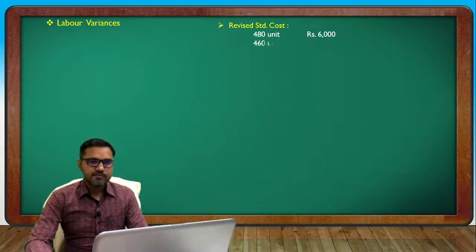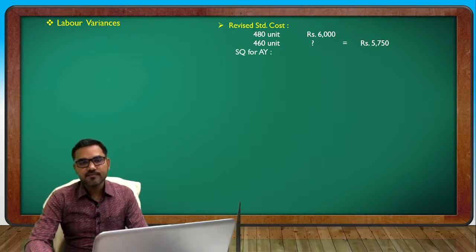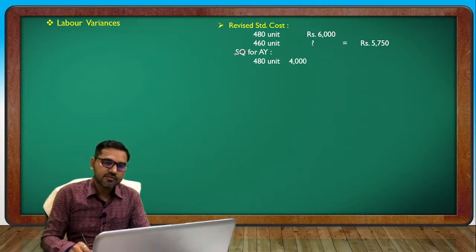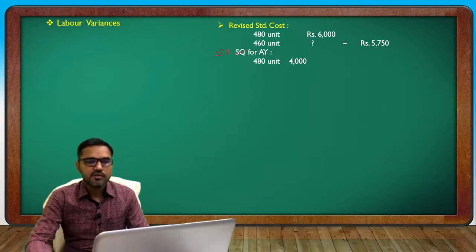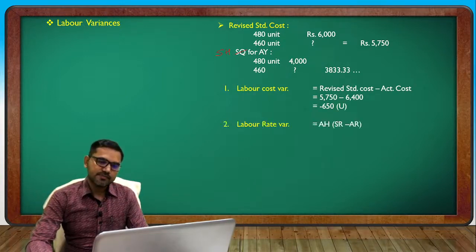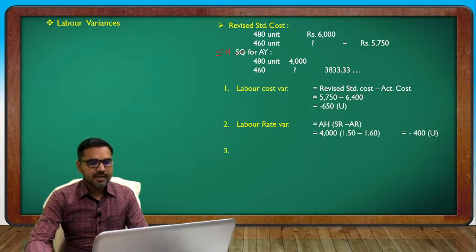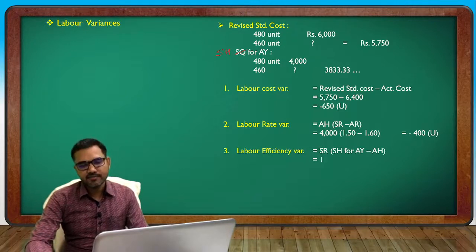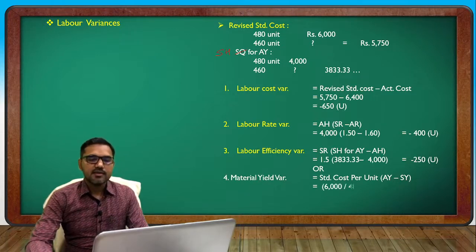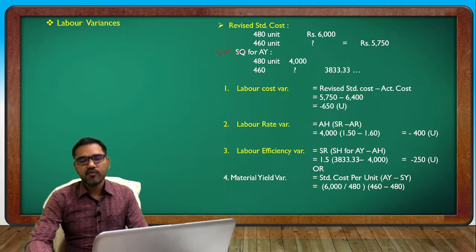Labor: same approach. 480 to 6,000, and 460. Labor rate: revised cost minus actual cost, labor rate minus actual. Hours calculation.